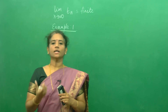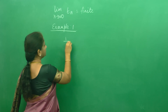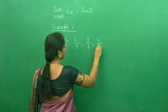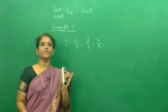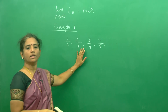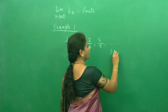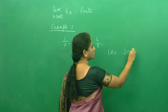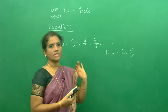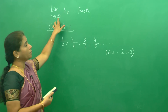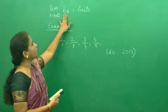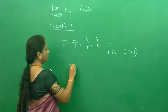We will do one example. We are going to check the convergence of the sequence 1/2, 2/3, 3/4, 4/5, etc. This is a sequence, and you cannot judge whether it is increasing or decreasing just by looking at it. Our aim is to check whether the limit as n tends to infinity of Tn is finite or not. For that, I need to find the nth term.